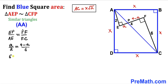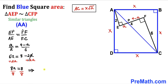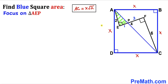Cross-multiplying the proportion gives 6a = 2(4 − a), which expands to 6a = 8 − 2a. Adding 2a to both sides: 8a = 8, so a = 1 cm. Therefore EP = 1, and PF = 4 − 1 = 3.